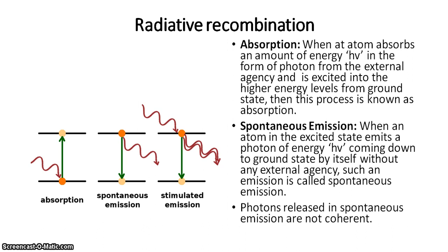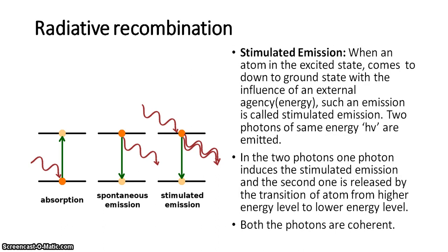In the case of stimulated emission, the particles cannot come down from the higher energy state to the lower energy state by themselves — they come down only when external energy is given to them. The basic difference between spontaneous and stimulated emission is that in both cases photons are given out, but in spontaneous emission it is incoherent whereas in stimulated emission it is coherent.